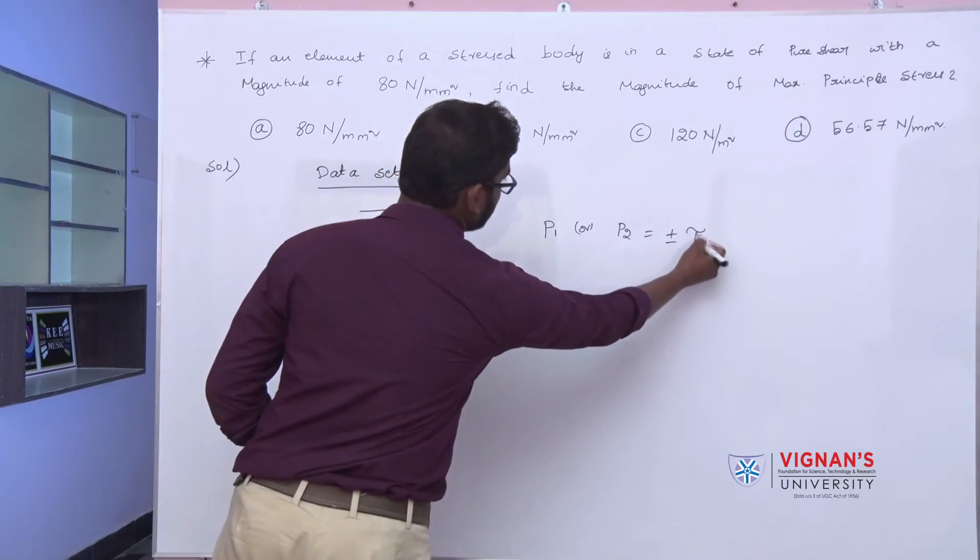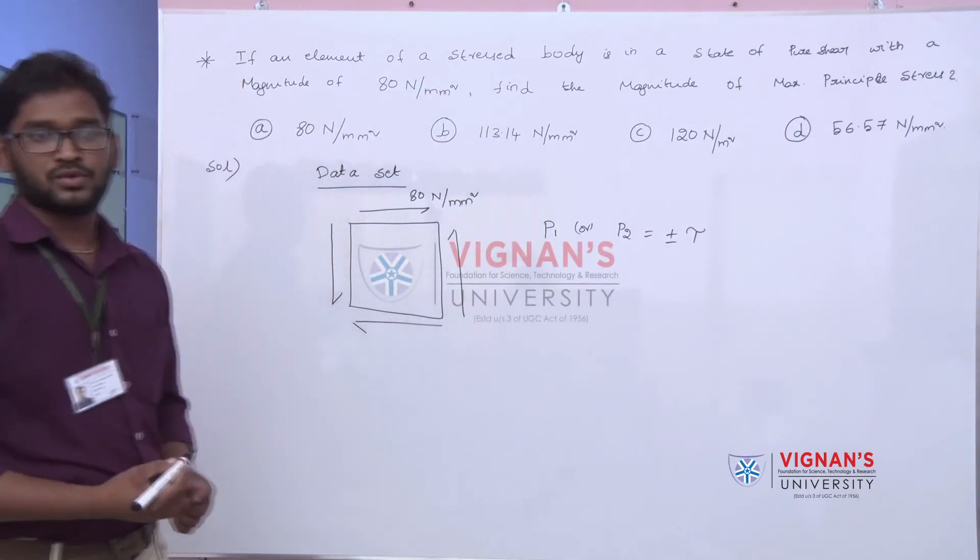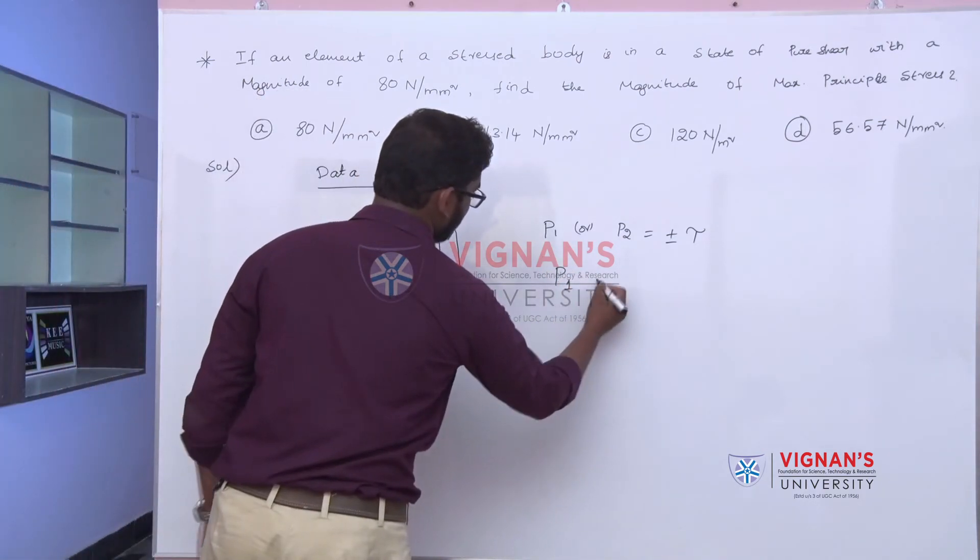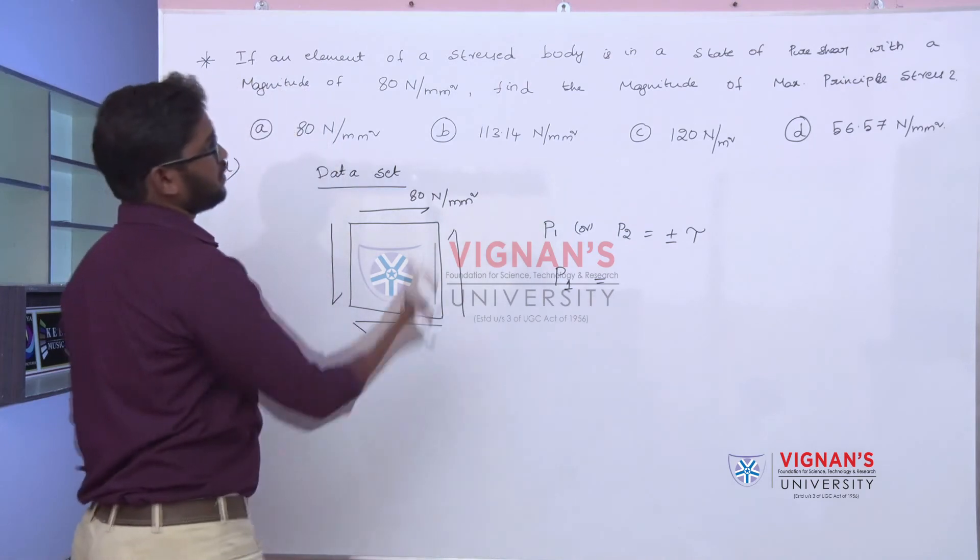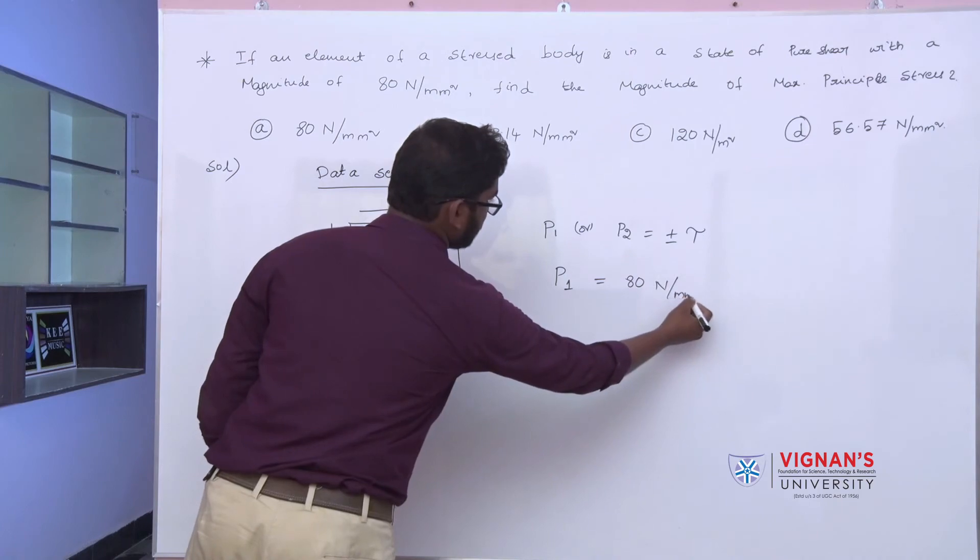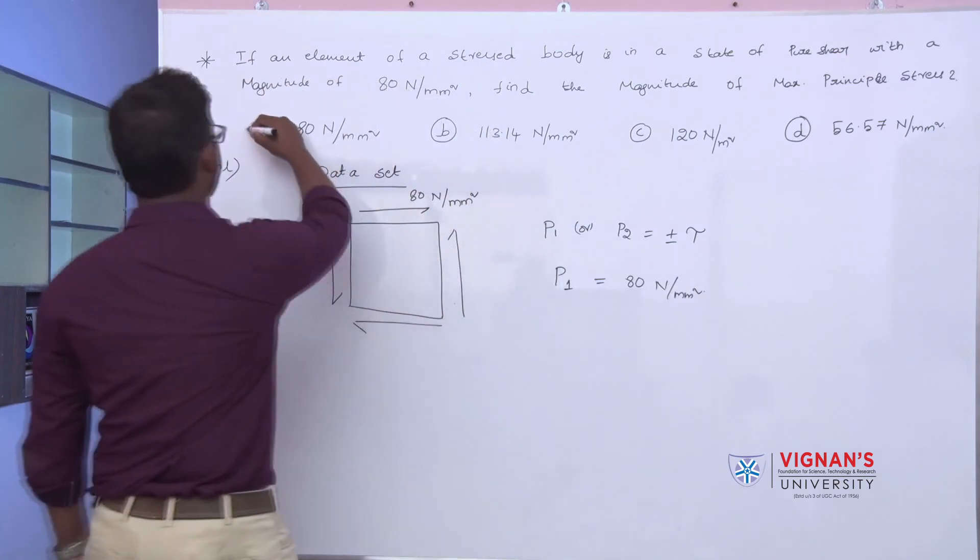For the maximum shear stress, p1 is equal to the magnitude of pure shear only, so 80 Newton per mm square. So the option will be A.